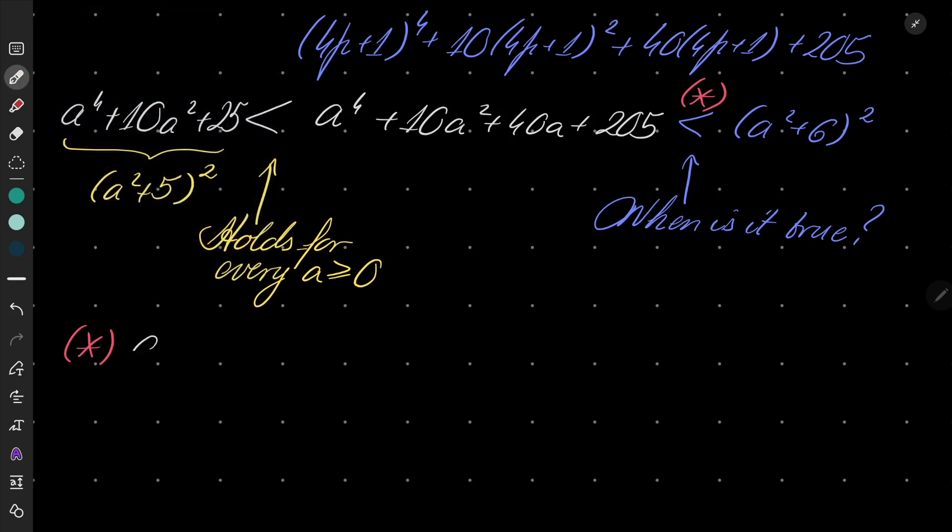So let's see, a to the fourth, 10a squared, 40a, 205. Let's expand the right hand side. I will have a to the fourth plus 12a to the second power plus 36.